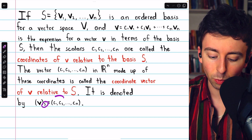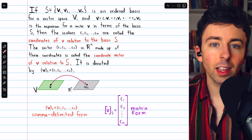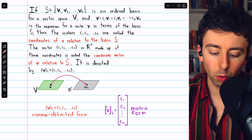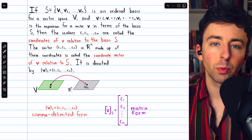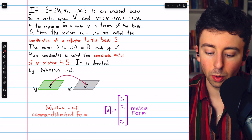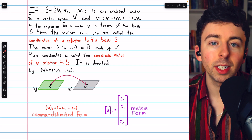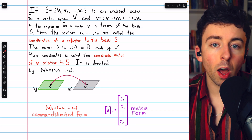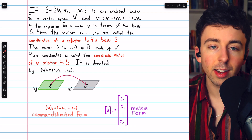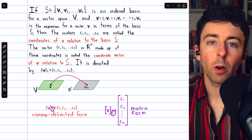If we take all of these coefficients c1 through cn in their appropriate order, that describes a vector in Rn. The vector made up of those coordinates is called the coordinate vector of V relative to the basis S. We could change the basis, and if we did, we would still express V as a linear combination of the new basis, but it would have different coefficients and hence a different coordinate vector relative to that new basis. This is how we denote the coordinate vector: parentheses around V with subscript S. These parentheses tell us we're looking at a coordinate vector, not the vector itself, and the subscript tells us the basis. It's also common to write coordinate vectors as column vectors in matrix form, using brackets instead of parentheses, with S still in the subscript.